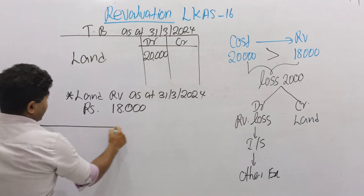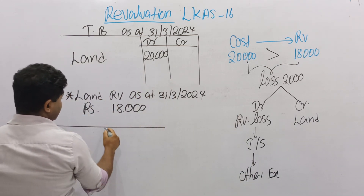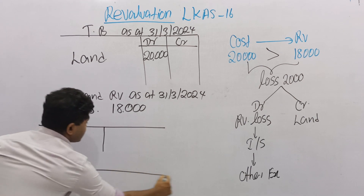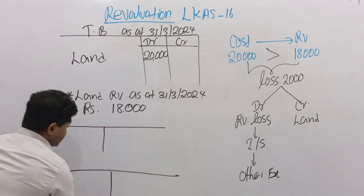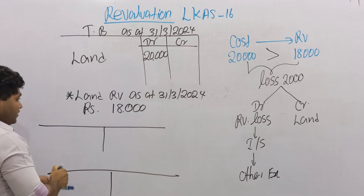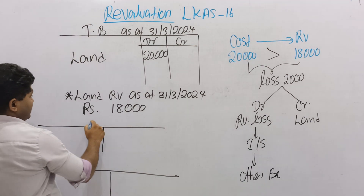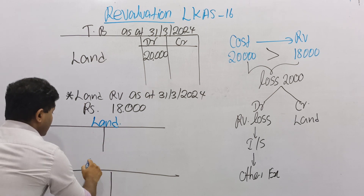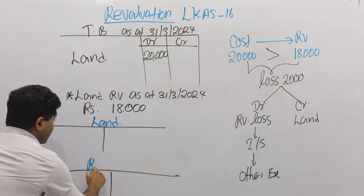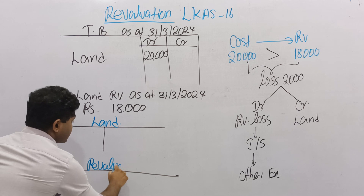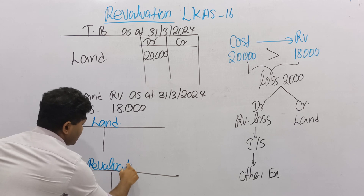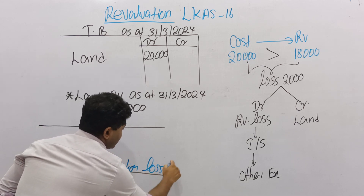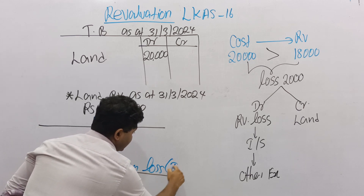Think about how to record in the ledger accounts. There are two separate ledger accounts: the Land account, as well as the Revaluation Loss account. Revaluation loss is an expense. The trial balance gives the opening balances. Then prepare the Revaluation Loss account — not reserves — within the income statement package.